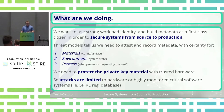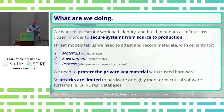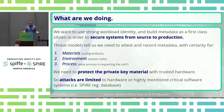So what are we doing? We want to use workload identity to secure systems all the way from source to production. When we threat model CI systems, we're looking at three different things we really need to attest: the materials going into that build, the environment the build is taking place in, and the actual process acting on those materials in that environment.